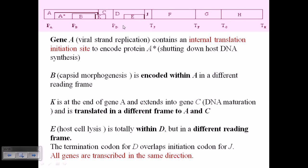Now the termination codon for D overlaps the initiation codon of J. So these things will always occur like that. All genes are transcribed in the same direction, so the directionality of the genes are the same. What is varying is the reading frame of the gene. That's why when we require gene E, gene D is not translated. When you require gene K, gene C is not...